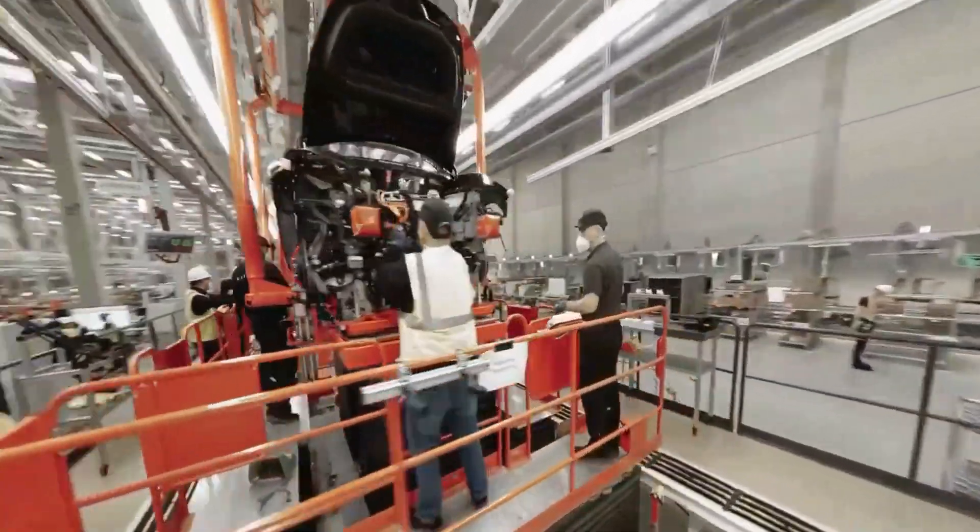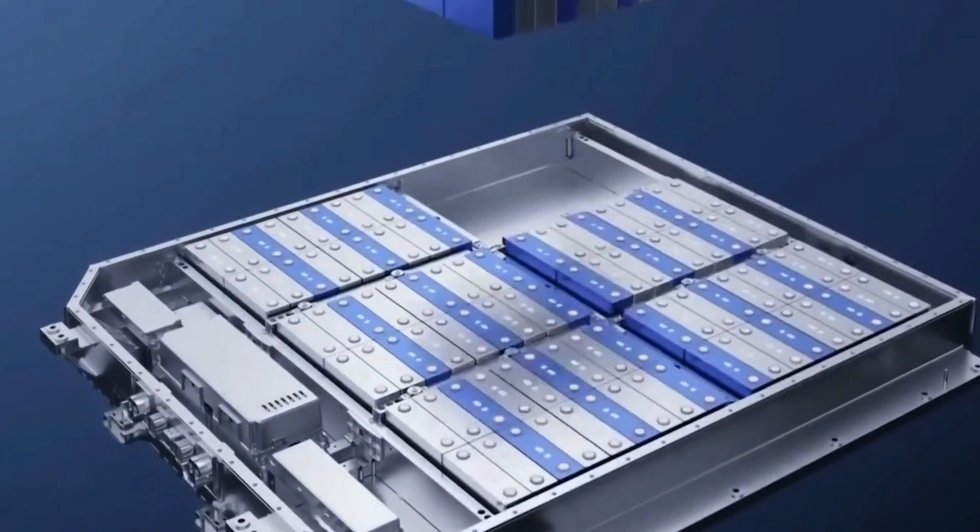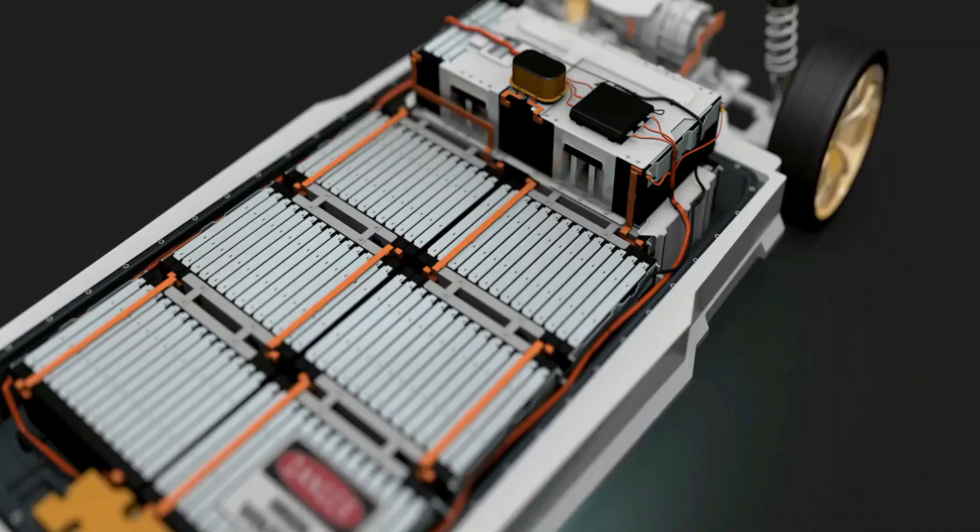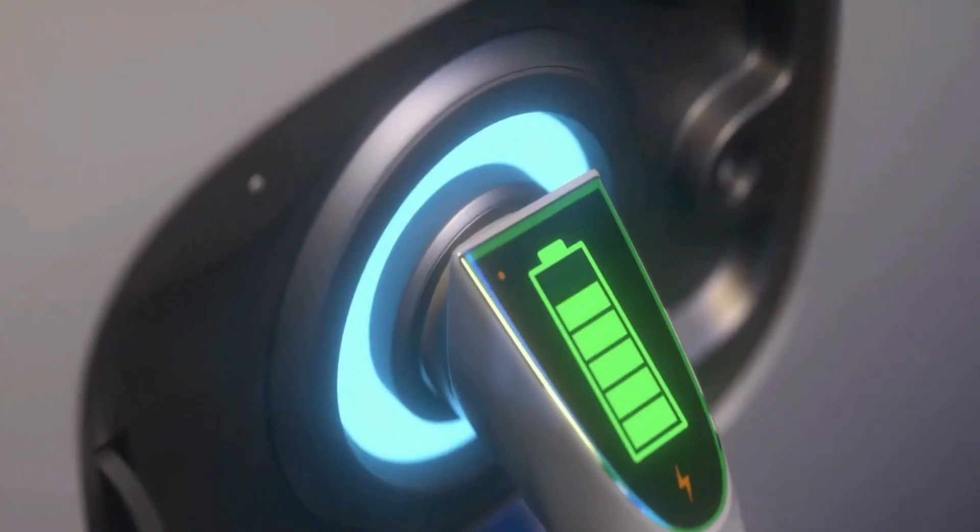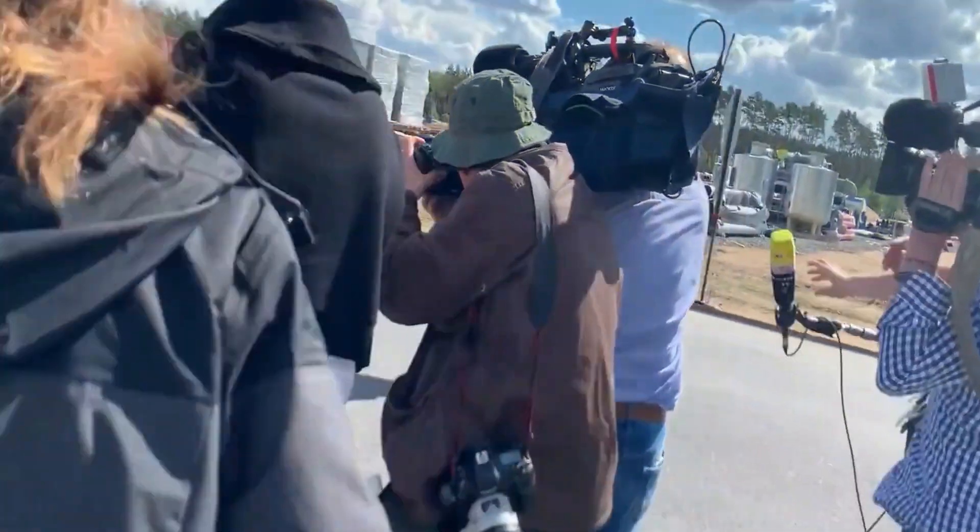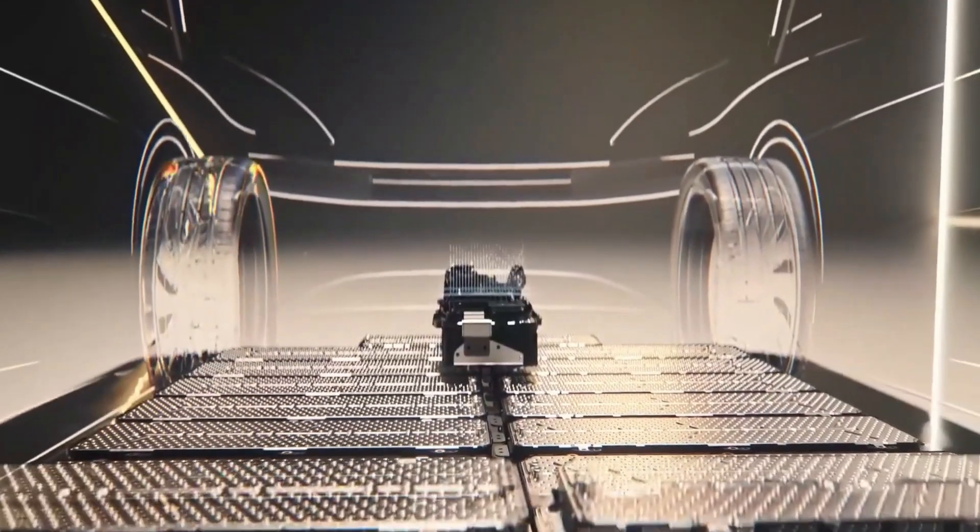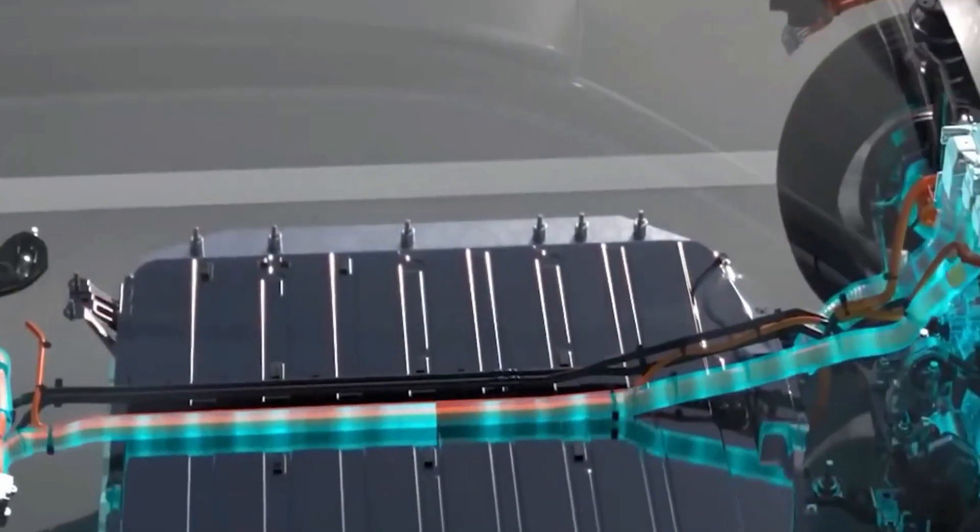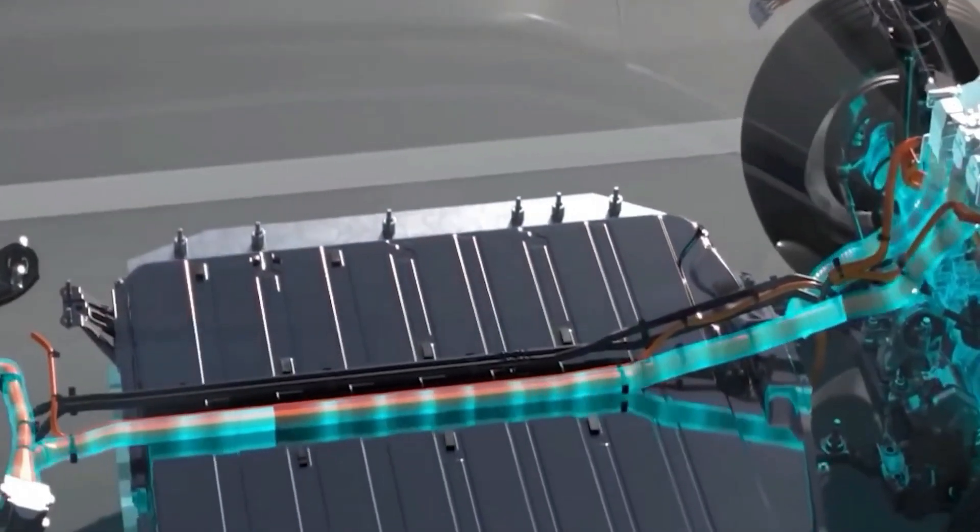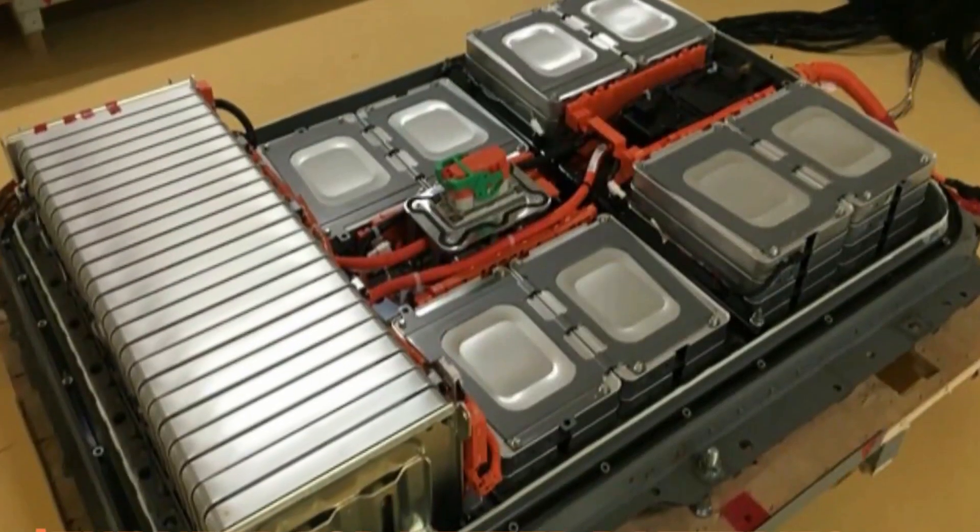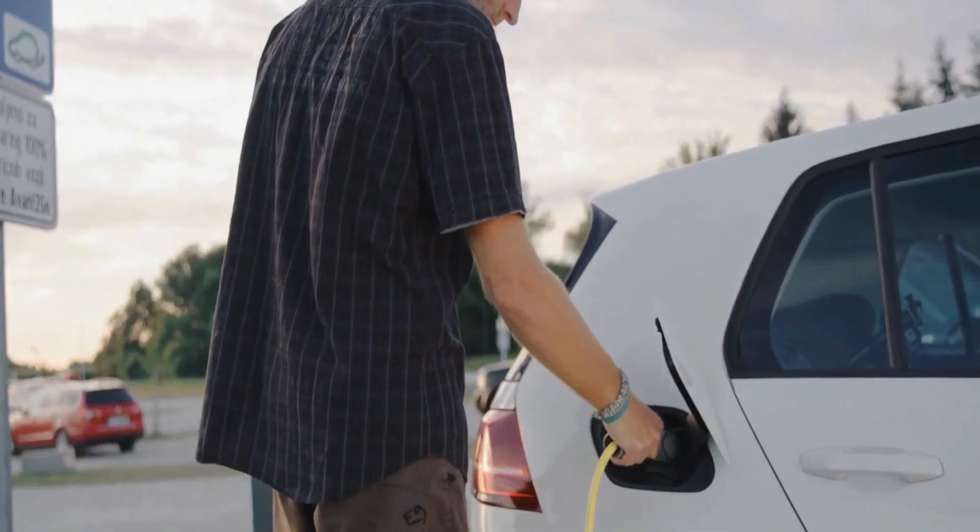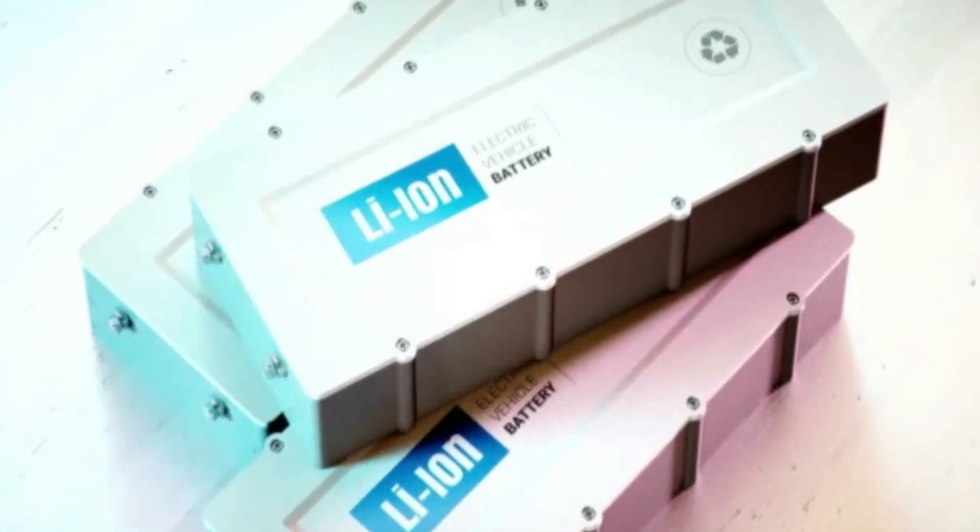Tesla's acquisition of dry process startup Maxwell Technologies in 2019 has given the company a head start on developing dry-cathode coating technology. However, successfully scaling up production for mass manufacturing has proven to be a formidable challenge. As a result, Tesla is seeking external expertise and rumors suggest that they have hired Matt Tyler, an expert in semi-solid batteries, to tackle this critical aspect of the process.